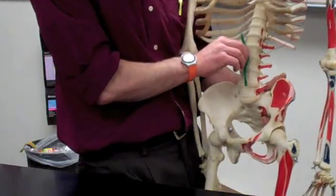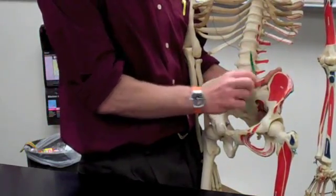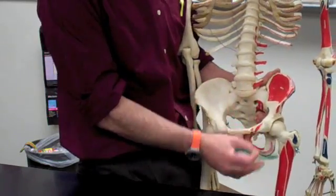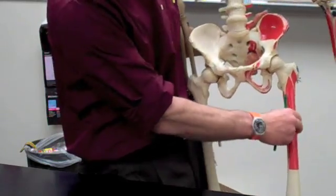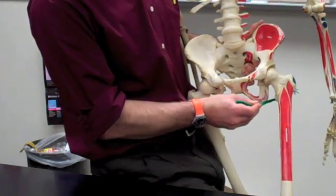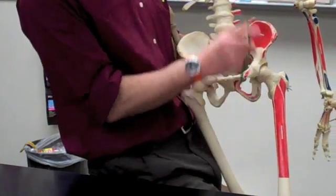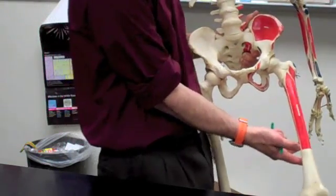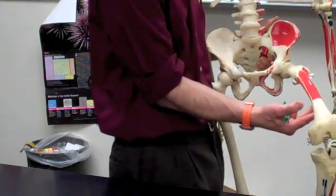And it moves underneath the inguinal ligament which goes from the ASIS to the pubic and goes and attaches into the lesser trochanter on the femur, the proximal femur. And as we can see this coming down, if it contracts, what is going to happen is we are going to raise up the thighs and we are going to flex the hip.